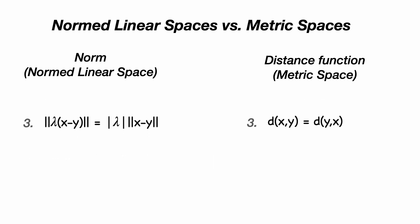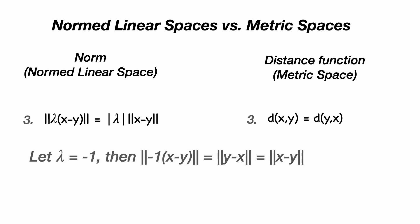So let's take a closer look at the third property because this is the only one that's different between our two kinds of spaces. What I want to show you is that actually these two properties are more similar than you might think. We can show that by taking the case of lambda equals minus one. If lambda equals minus one, then we're taking the norm of minus one times X minus Y. And minus one times X minus Y is equal to Y minus X. So we're actually taking the norm of Y minus X. And by property three of a normed linear space, we can take that minus one, take the absolute value of it, which gives us one, and then just take the norm of the original vector X minus Y. So we have that the norm of X minus Y is equal to the norm of Y minus X.